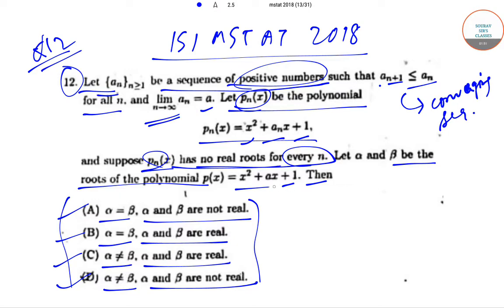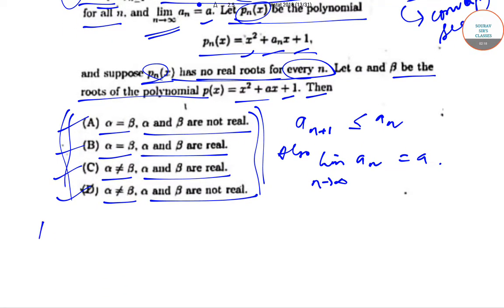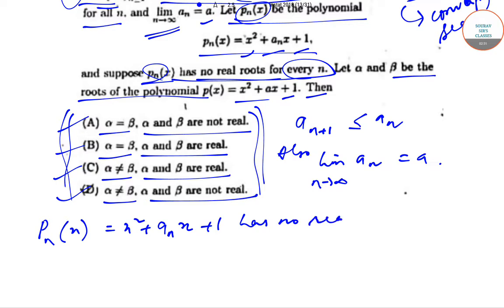Now, alpha and beta are the roots of the polynomial p(x) = x² + a·x + 1. We need to find the relationship between alpha and beta and whether they are real or not real. We have been given that a_{n+1} is less than or equal to a_n, and the discriminant condition for p_n(x) gives us a_n² minus 4 is less than zero — this is the condition for no real roots.